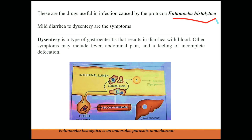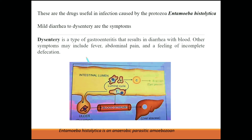We will discuss the symptoms first. The main symptom is gastroenteritis, which is diarrhea with blood. If you have diarrhea with blood, it is called dysentery. Other symptoms are fever, abdominal pain, and feeling of incomplete defecation.